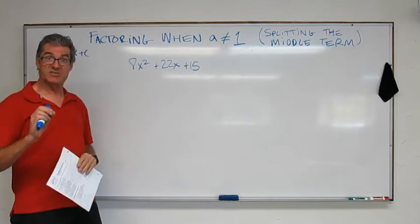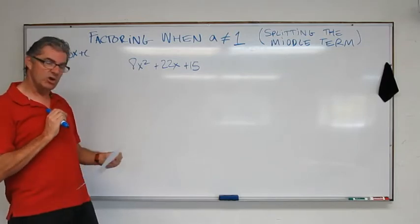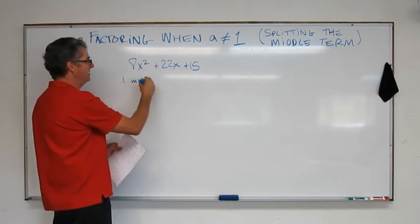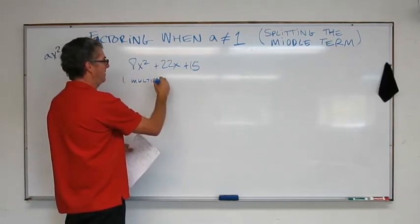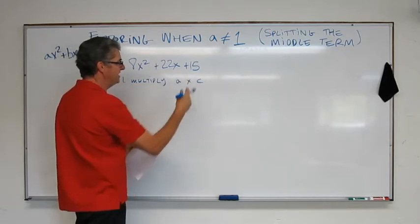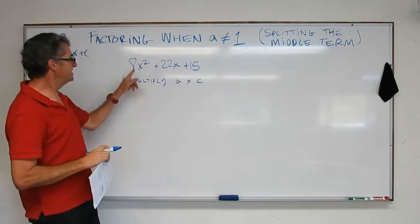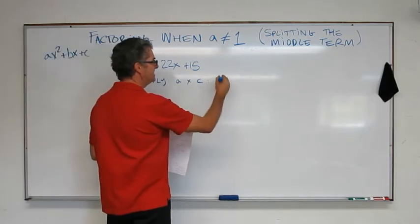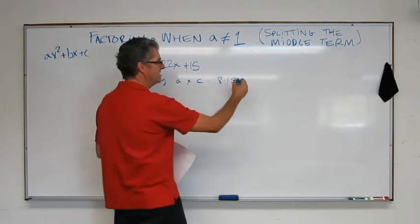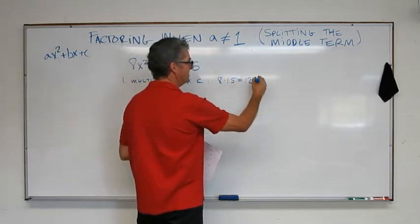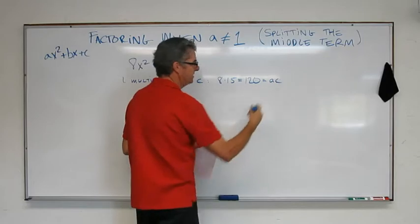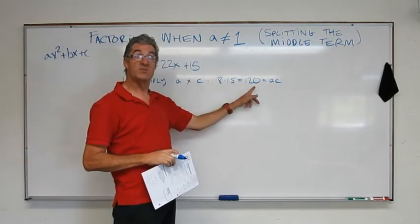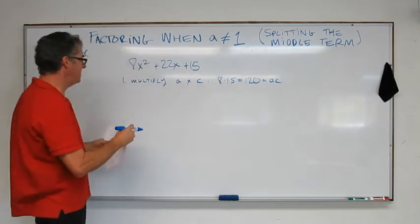So this is an interesting process. You might want to make some good notes for this one. Step one, multiply a times c. So what that means is the a term times the c term. So what we'll get here is 8 times 15, which is 120, which is ac. So now we have this quantity ac, and we know that's 120. Okay, so we need to remember that, because we're going to use it in the next step.